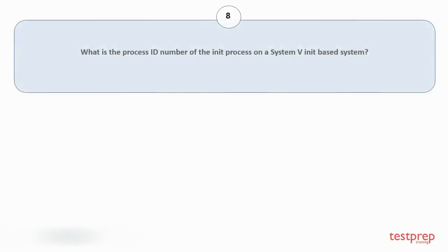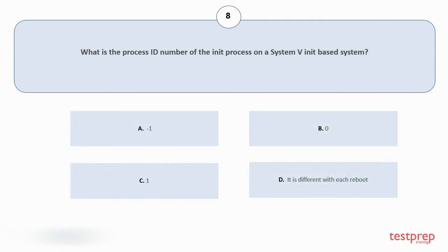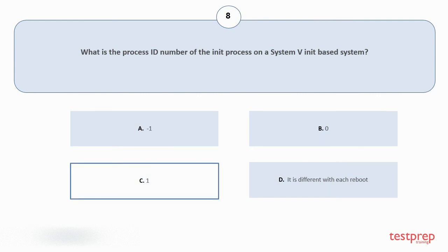Question number 8: what is the process ID number of the init process on a System V init-based system? Your options are: a. minus 1, b. zero, c. one, d. it is different with each reboot. The correct answer is option C.